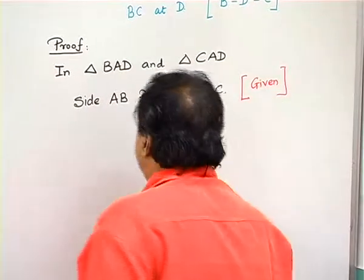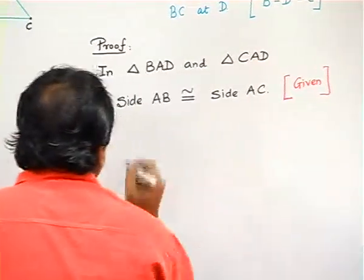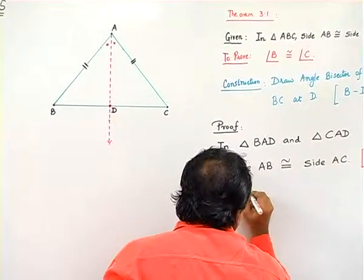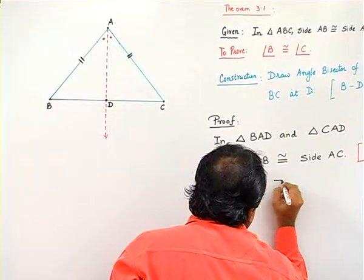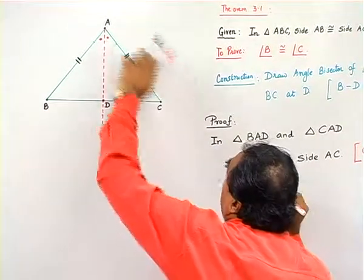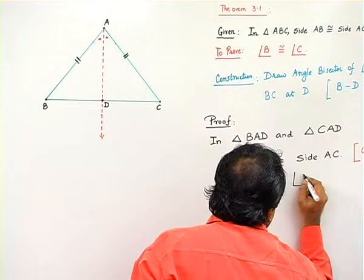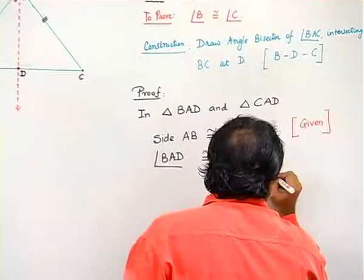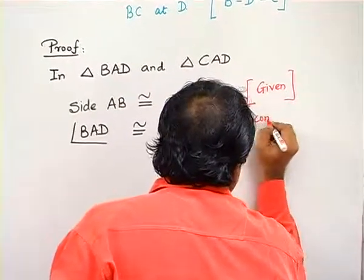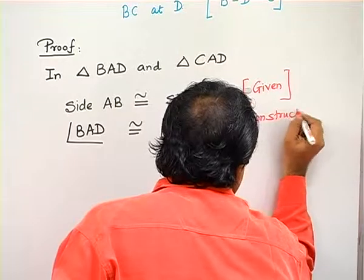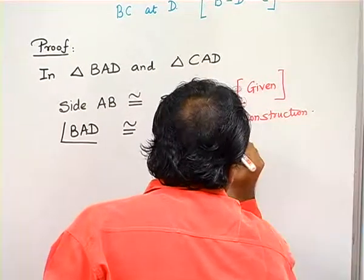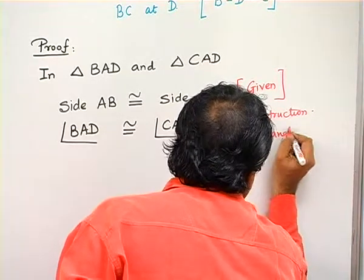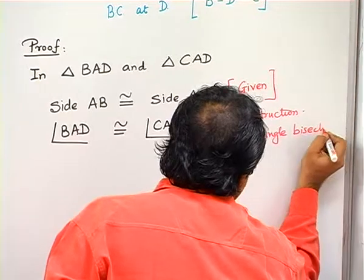Then we will say, angle BAD is congruent to angle CAD. What is the reason? Second, we can say, by construction, AD is the angle bisector.